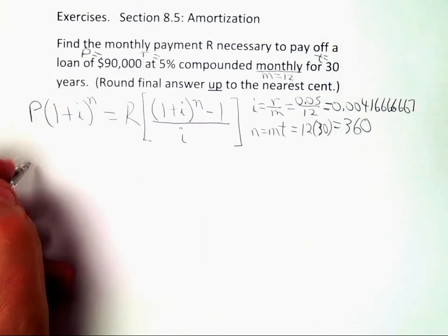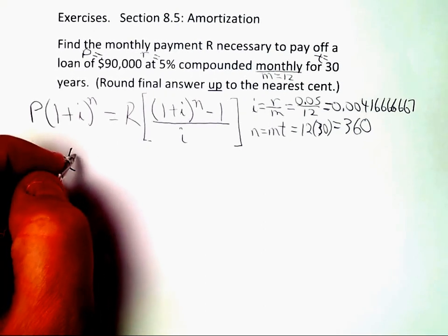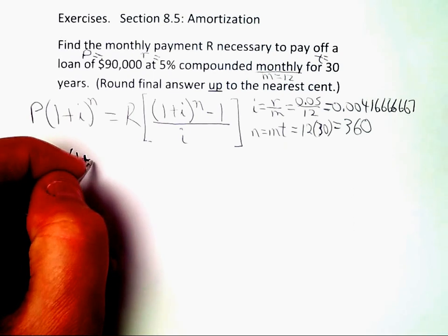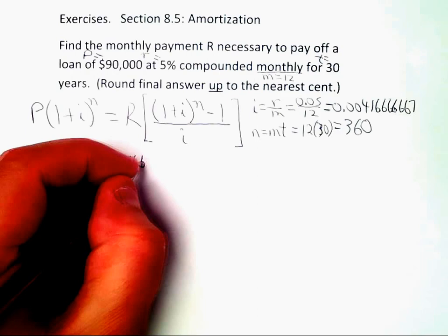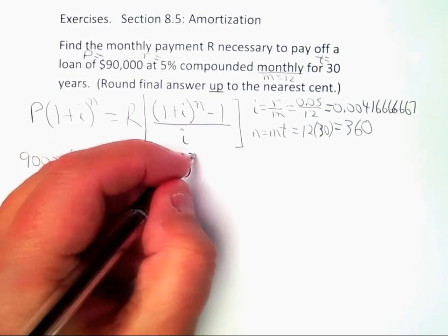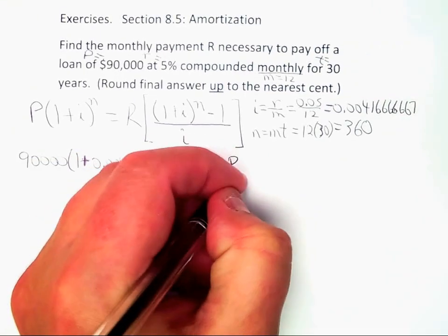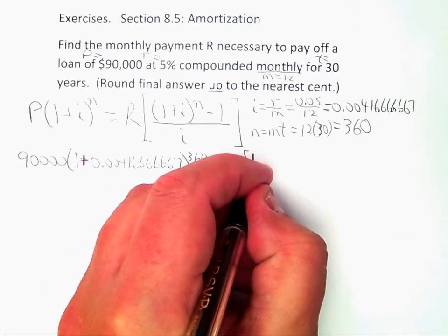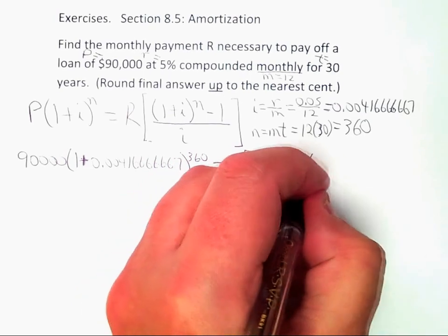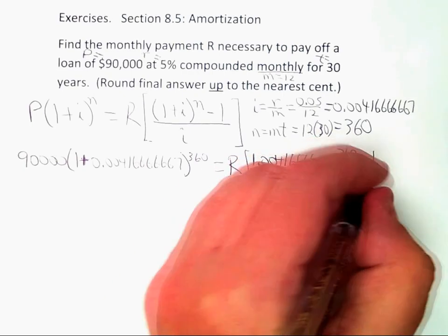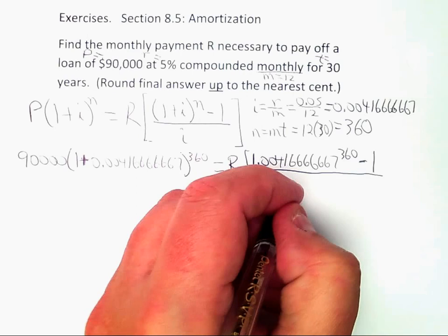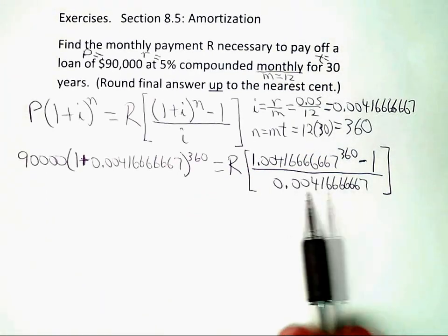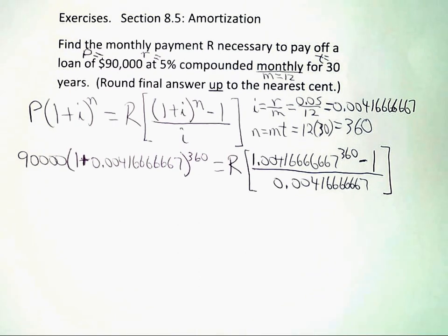Now it's a matter of plugging things in. So the present value is 90,000, so you get 90,000 times the quantity 1 plus, and it's this value, but keep in mind, I have it in the calculator, so I'm not depending on how I've rounded it. But 0.00416666667 to the 360th power is equal to capital R. And then this 1 plus i is the same as 1 plus i over there, so I can go ahead and just do the addition and write it as 1.0041666666667 raised to the 360th power, then subtract 1 and divide the whole thing by little i. I can't emphasize enough that I have that interest rate stored in memory so that I can use it without even relying on the amount of rounding I've done there.